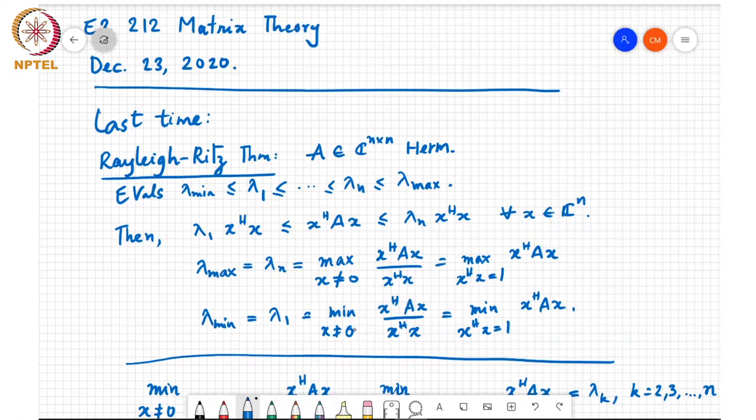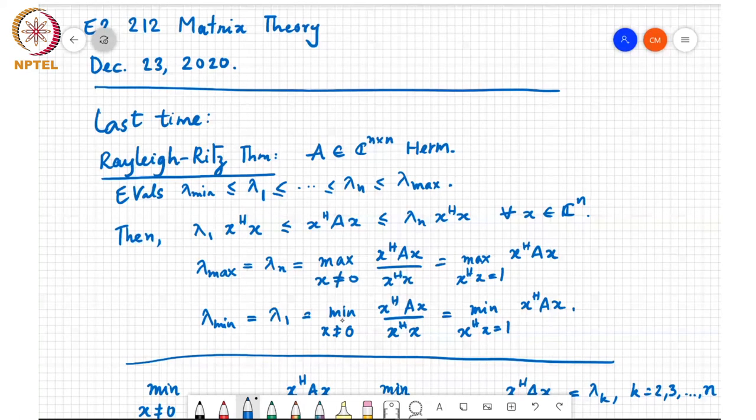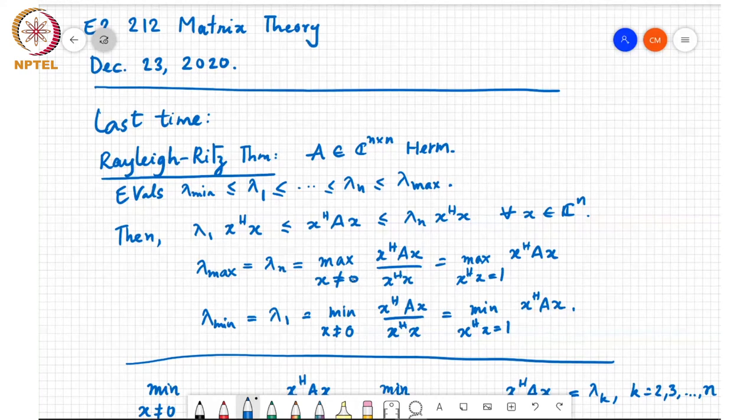Similarly, lambda 1 is the minimum of x-Hermitian Ax over x-Hermitian x for all x not equal to 0. So this is a maximization problem and this is a minimization problem. And the smallest and largest eigenvalues can be written as solutions to a minimization problem and here a maximization problem.